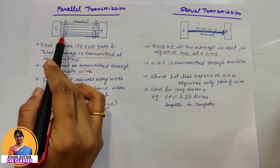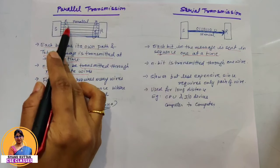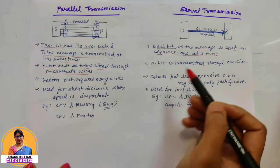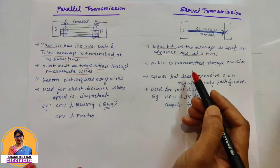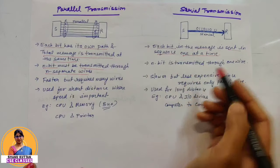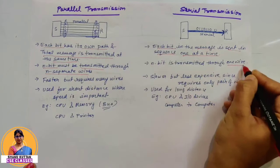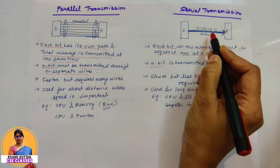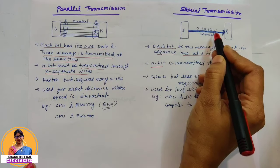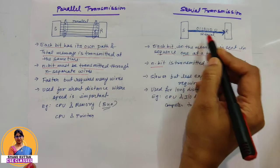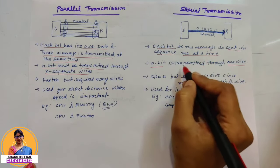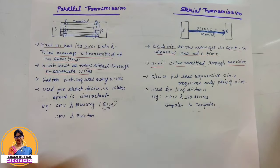To transfer N bits, we use N separate wires. If you have 8 bits, then we use 8 separate wires. In serial transmission, N bits are transmitted through a single wire one at a time. Suppose we have 8 bits to transmit — all 8 will be transmitted over a single wire.